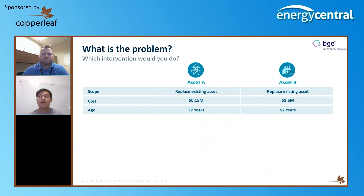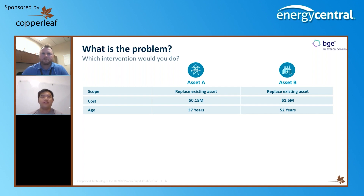So what is the problem here? Let's take a look at two assets that we need to do an intervention on. We have Asset A and Asset B — one transmission structure and one transformer — and we're looking to replace each of these. The tower costs $150,000 and is currently 37 years old, whereas the transformer would cost $1.5 million dollars and is currently 52 years old.